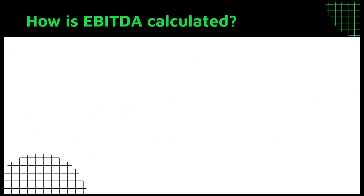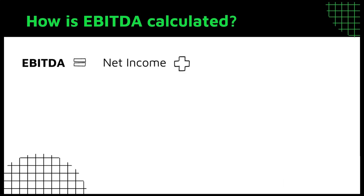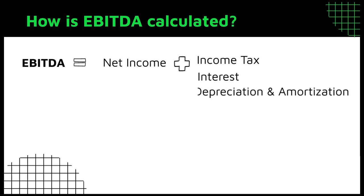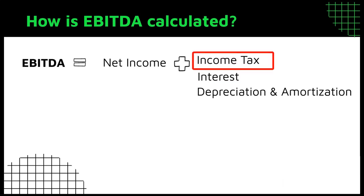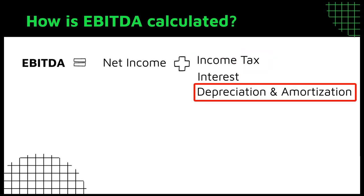So how is EBITDA calculated? Some companies report EBITDA as a separate line item, some don't. If it's not reported, simply take the net income on the income statement and add back income tax, interest, depreciation, and amortization expenses. Basically, EBITDA considers profit from corporations and excludes the impact of the cost of debt capital, taxes to government, and non-cash expenses.